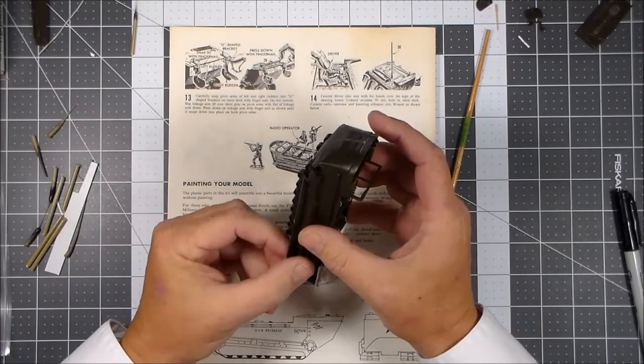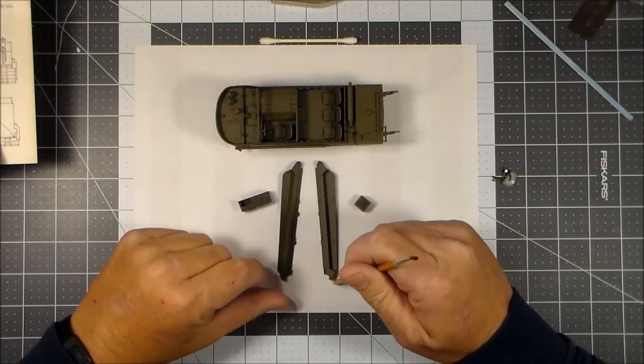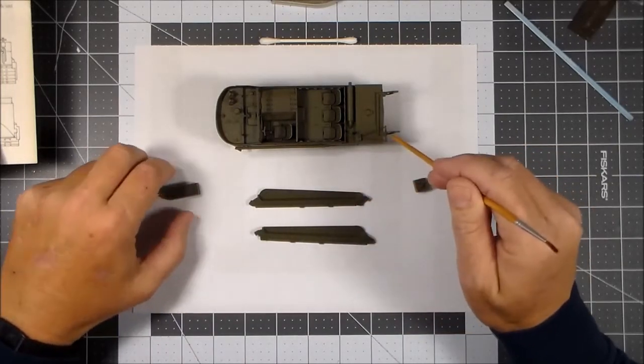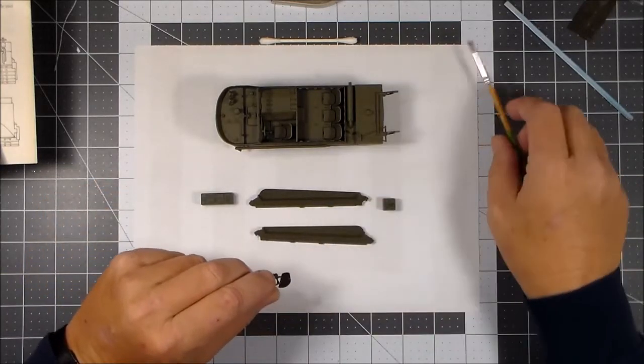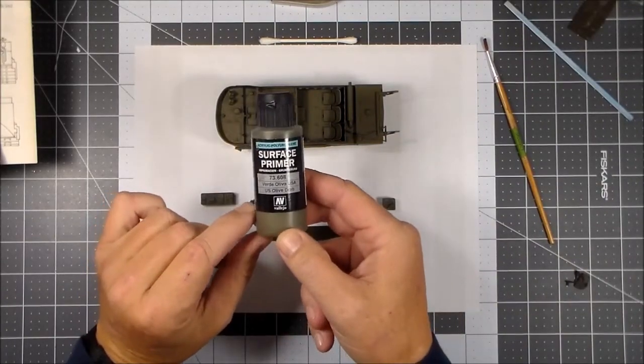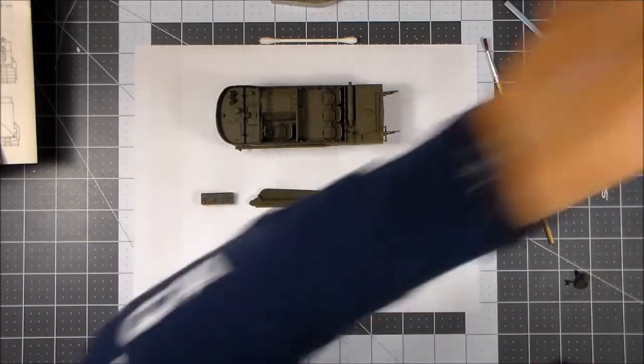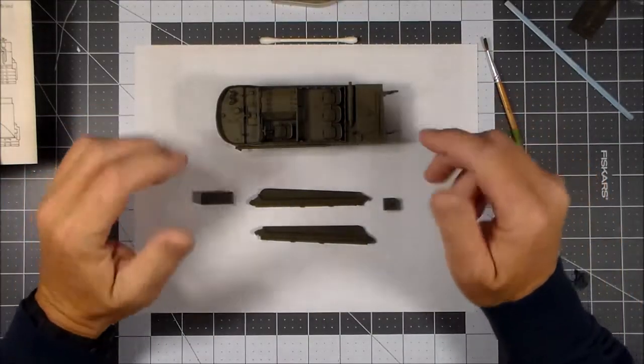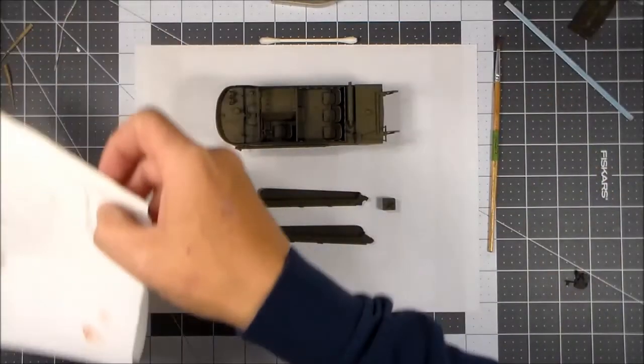And here is where it stands thus far. I've got all the building completed including all the scratch building, and everything has been primed slash painted because I used the acrylic olive drab surface primer. So that's my paint and primer coat. I've also got the tracks primed on one side. But this is where it stands, the modifications I made up to this point.